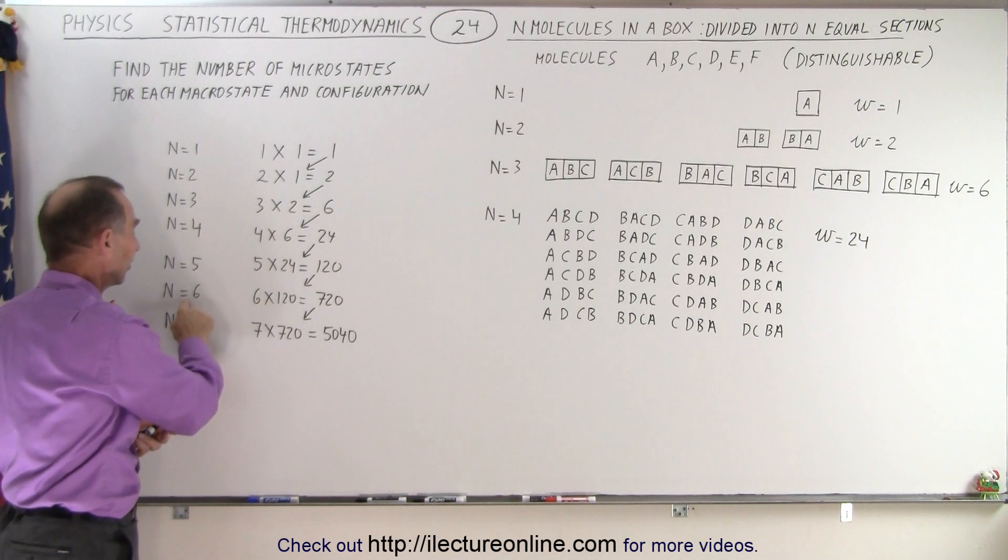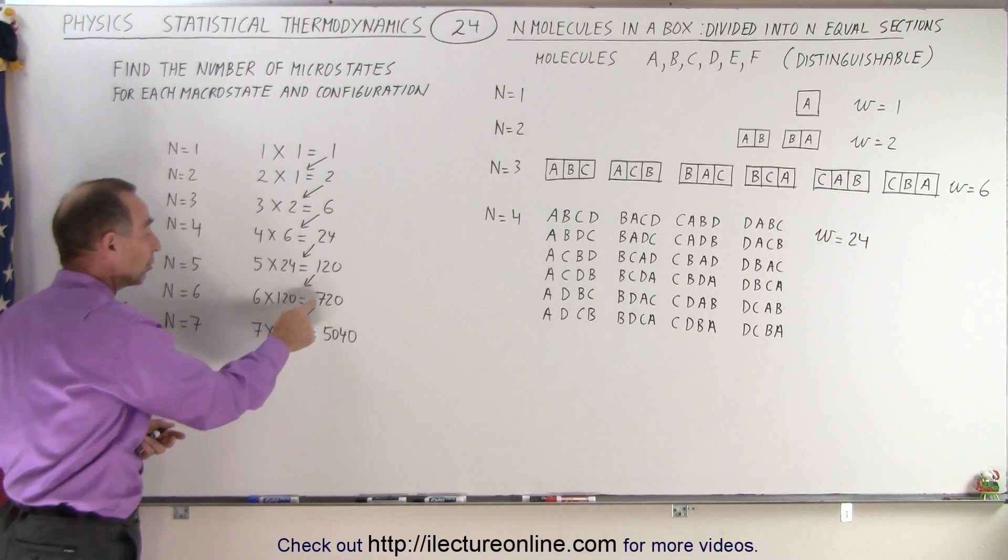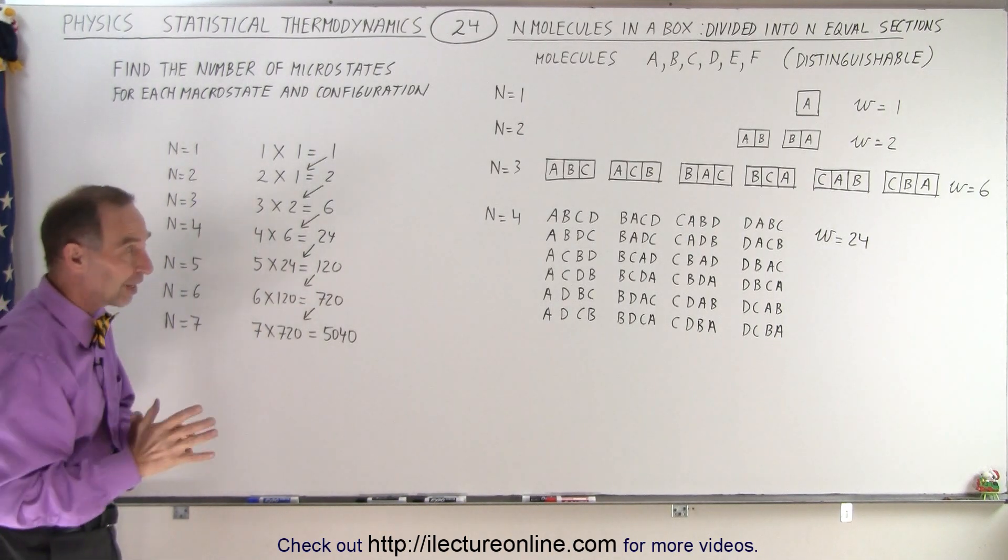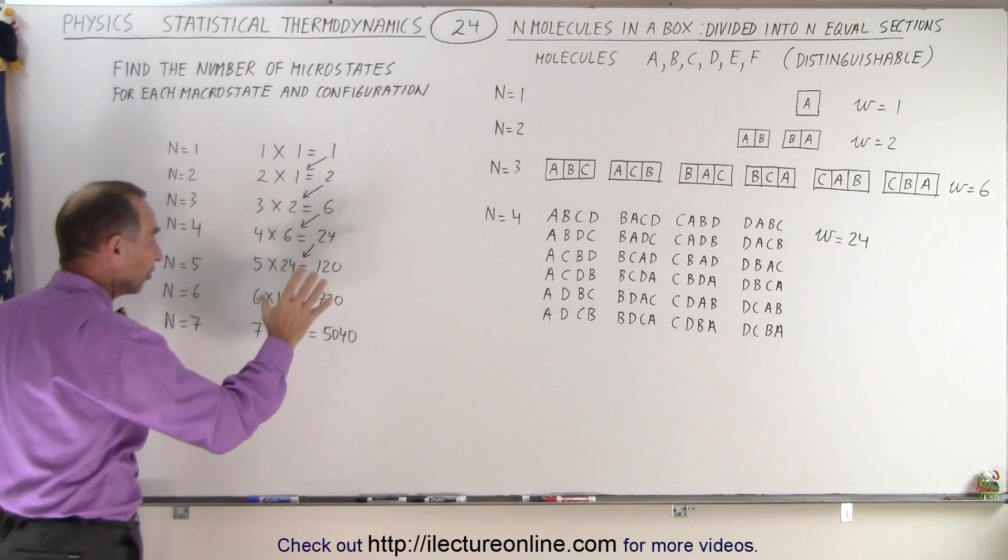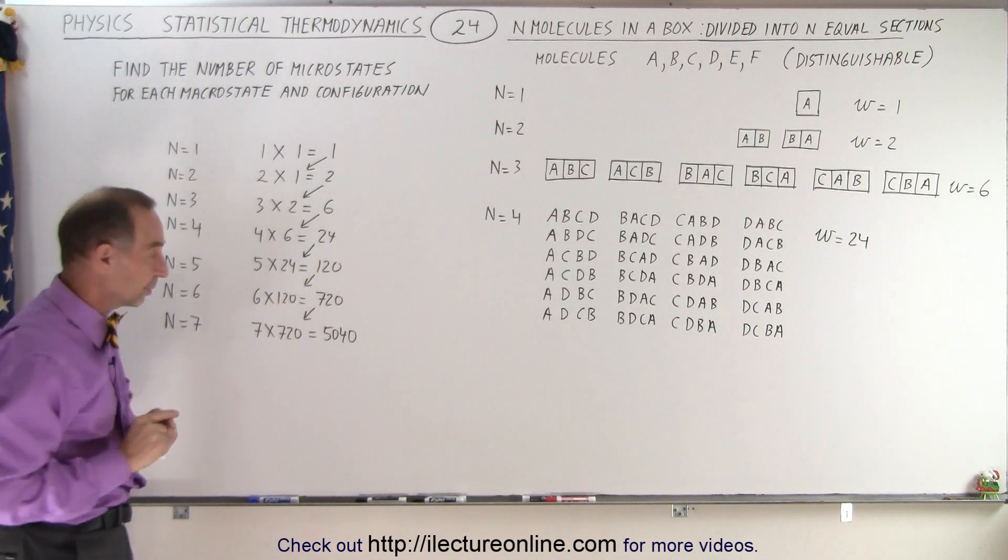Bring the 120 down. n equals 6. So 6 times 120, or 720 different microstates, which we showed in the previous video. Six molecules in six different partitions, one molecule per partition.